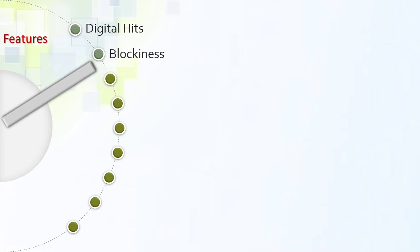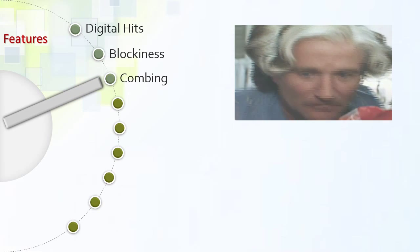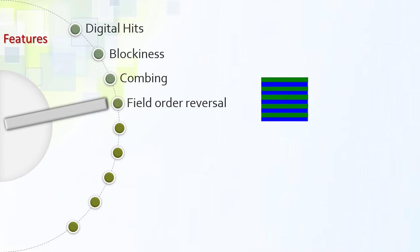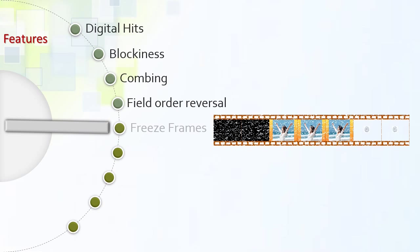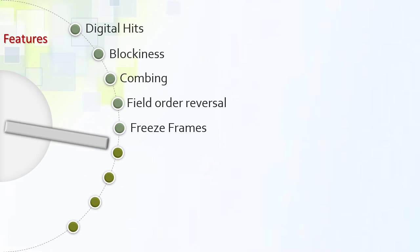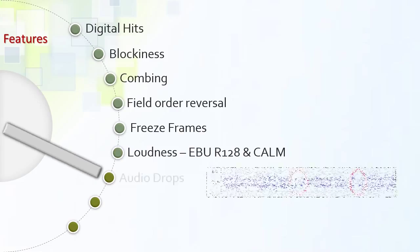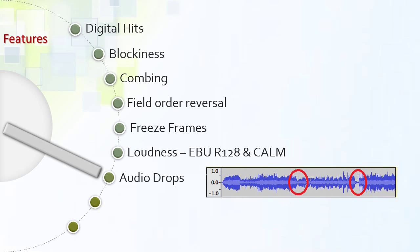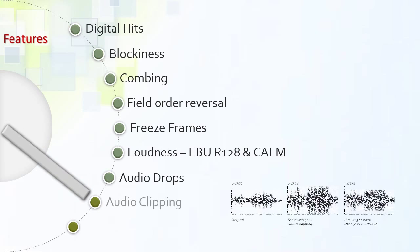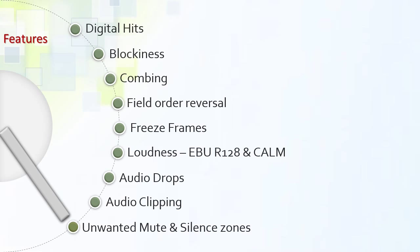Pulsar can detect digital hits, find blockiness, combing artifacts, field order reversal, and freeze frames. Pulsar can detect loudness violations based on EBU or CALM Act specifications. Pulsar can also spot audio drops as well as audio clipping or unwanted mute or silence zones.